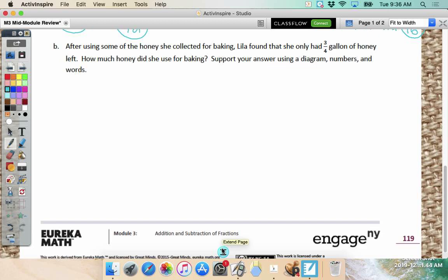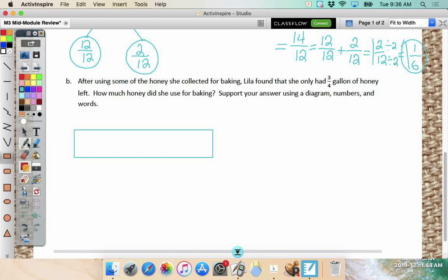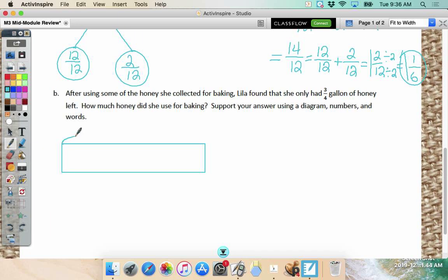So I have a total, boys and girls. What's my total? One and one-sixths. After using some of the honey she collected for baking, Lila found that she only had three-fourths gallon of honey left. How much honey did she use for baking? Support your answer using a diagram, numbers, and words. We've got this, don't we? Okay. So tape diagram. I have a total. What's my total? One and one-sixths. And you know what I'm thinking? I'm thinking I'm going to have to change that. But we'll talk about it. So I'm going to put an equal sign there.